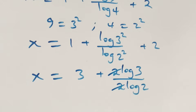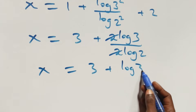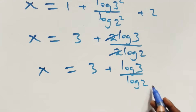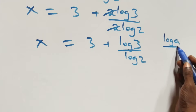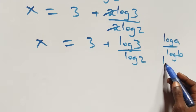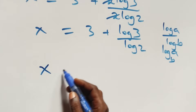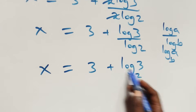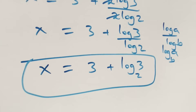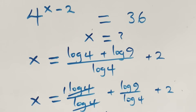The log 4 terms cancel each other and what we have left becomes x equals 3 plus log 3 over log 2. The next step here, we apply the change of base formula: when we have log a over log b, we can express this as log a to base b. Therefore, x equals 3 plus log 3 to base 2.